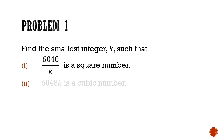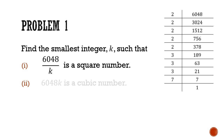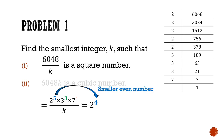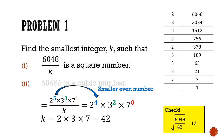First, prime factorize 6048 using the ladder method to get 2 to the power of 5 times 3 cubed times 7. To get a square number after dividing by k, we need to drop each prime's index to the next smaller even number: 2 to the power of 5 becomes 2 to the power of 4, while the powers of 3 and 7 must become 2 and 0 respectively. This means k has to be 2 times 3 times 7, which is 42. We can verify this with a calculator, and it checks out.